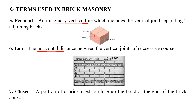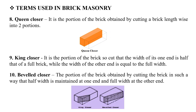The closer is the portion of a brick used to close up the bond at the end of a brick course. The horizontal distance will be closer. It contains two pieces and marks a header portion.